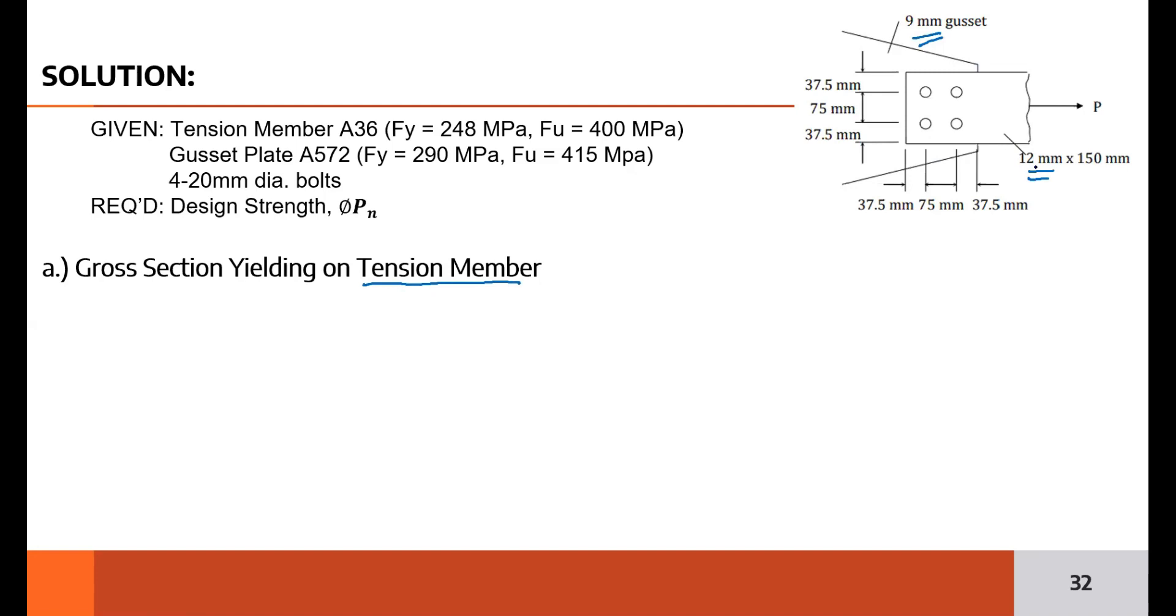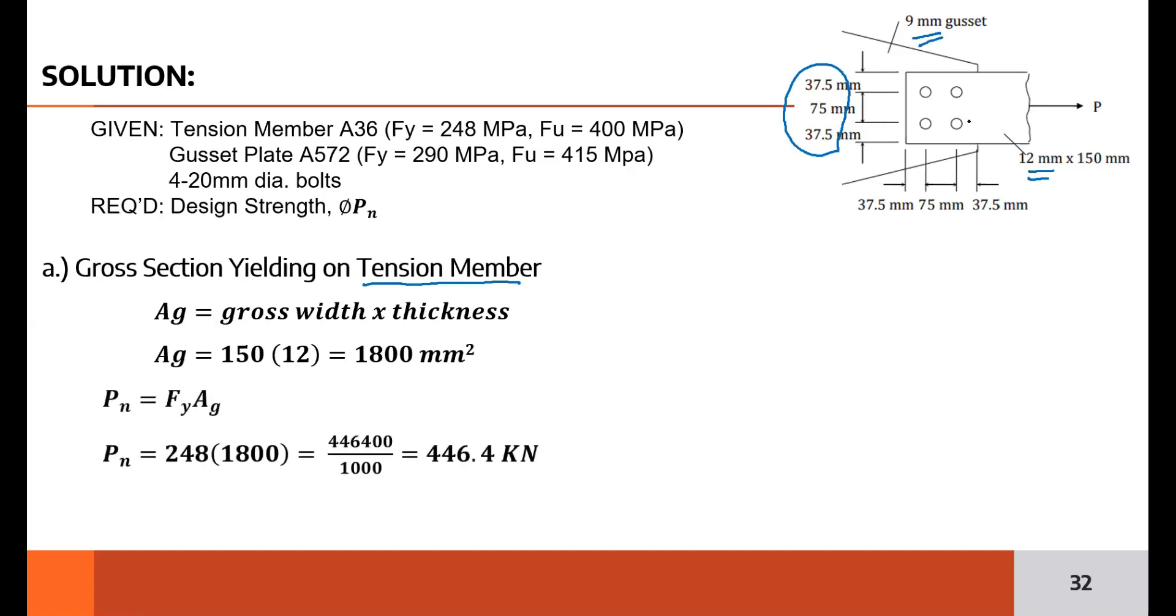Actually, you should also solve the GSY of the gusset plate. However, based on the given data, you can't determine the gross area of the gusset plate. It's not given. The gross width of the gusset plate isn't given. Notice the figure. When you total all these dimensions, that is 150. That's the gross width of the tension member. But the gross width of the gusset plate wasn't provided.